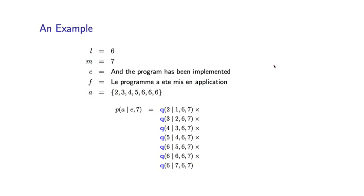Let's work through an example. Consider this English sentence and French sentence where the lengths of the English and French are 6 and 7 respectively. For this particular alignment, the probability is a product of Q terms: the first term is the probability of position 1 in French being aligned to position 2 in English, conditioned on those sentence lengths. Similarly, each of the 7 French positions is aligned to positions 3, 4, 5, 6, 6, 6 respectively, giving us the probability of this alignment conditioned on the English sentence and the length of the French sentence.